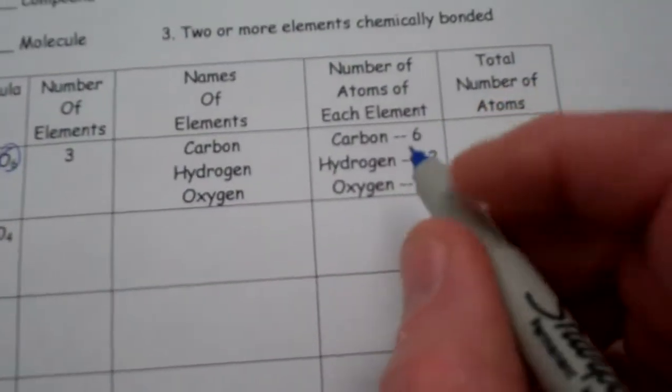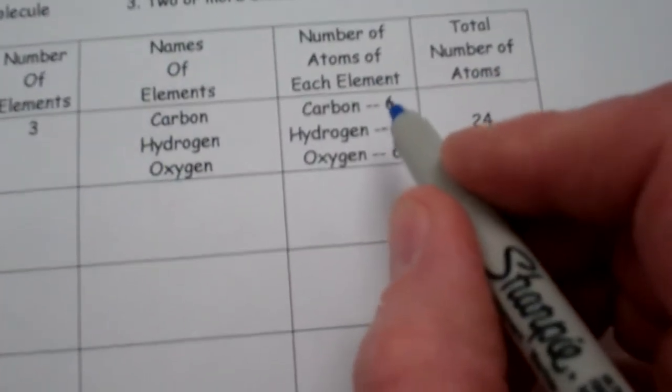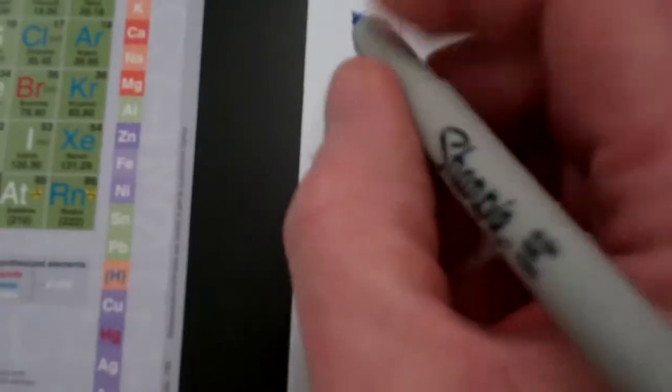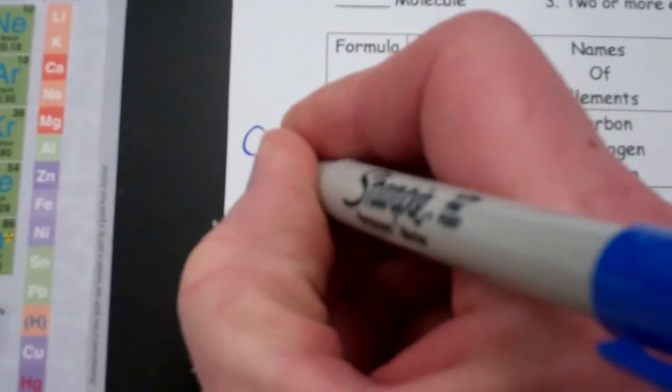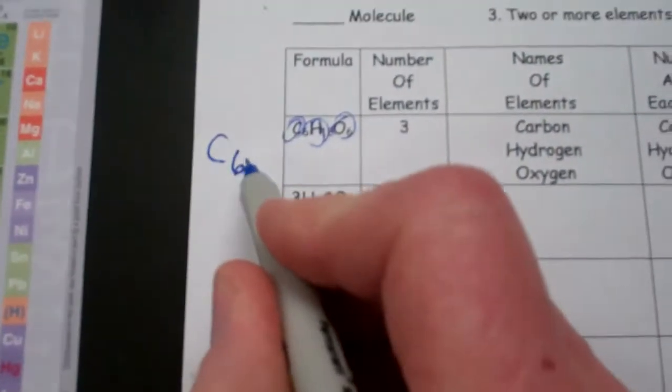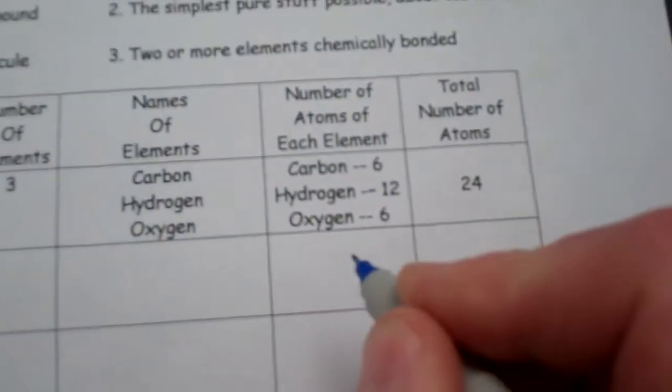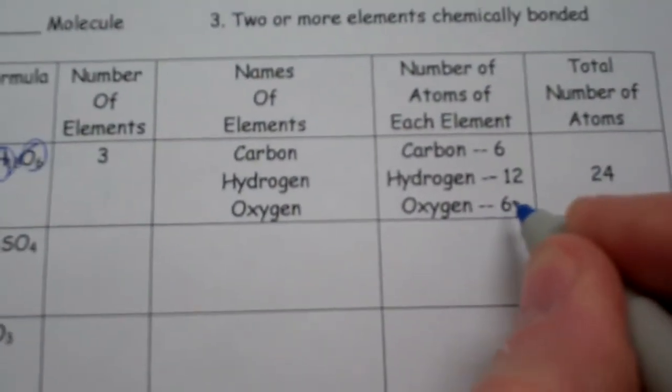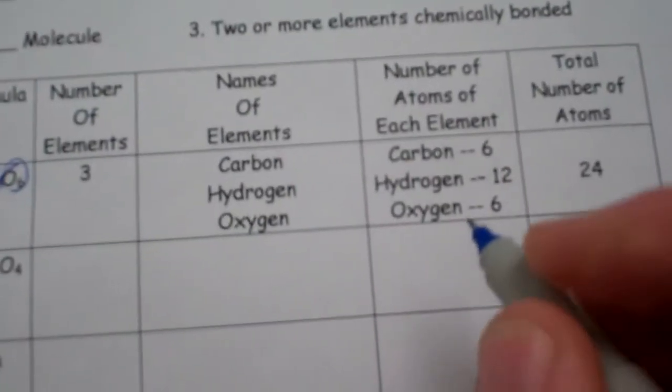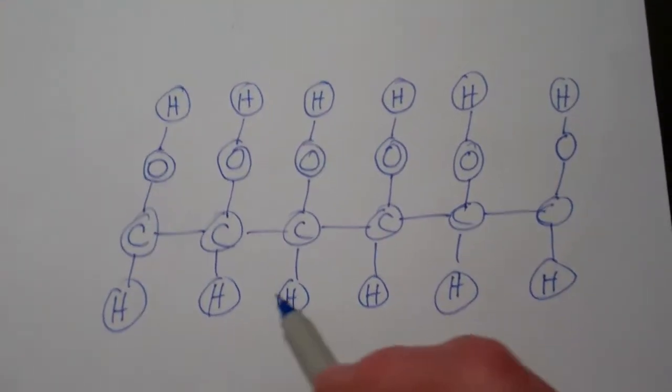And this is the one that gets most people. How many atoms of each element are in there? Now, when you have a subscript, that's called a subscript, C6, that means there's six carbon atoms. H12, well, that means there's 12 hydrogen atoms, and O6, that would be six oxygen atoms. So just in case you were wondering,